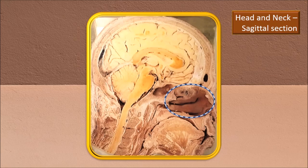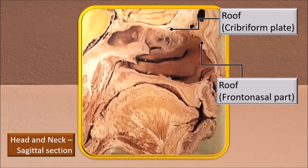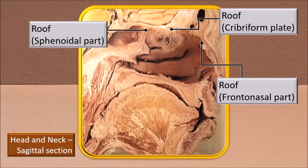Zooming in, the roof is identified as the cribriform plate. The roof also extends slightly in front — that part sloping downwards and forwards is the anterior extension called the frontonasal part. Behind the cribriform plate, the anterior wall of the sphenoidal sinus also forms part of the roof. Therefore, the roof has three parts: the cribriform plate as the principal area, the anterior frontonasal slope, and the posterior sphenoidal slope.